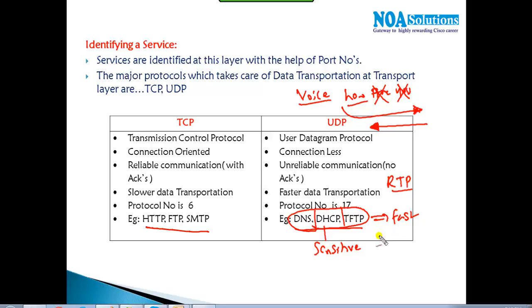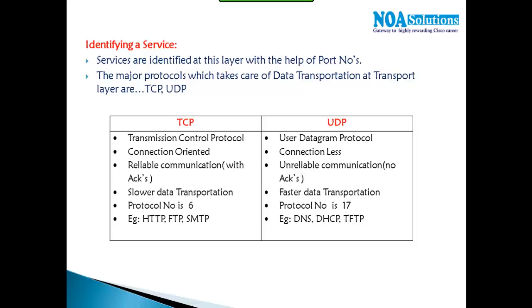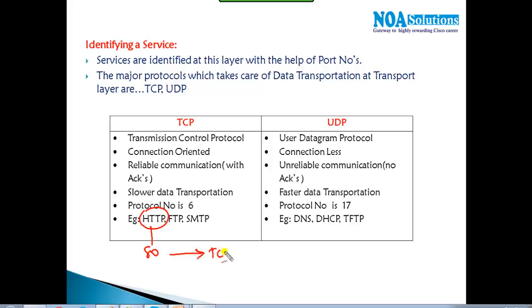Protocols like TFTP, DHCP, and DNS don't need acknowledgements and work based on UDP. Protocols like HTTP, FTP, and SMTP require acknowledgements and work based on TCP. Depending on the type of service — for instance, if it's HTTP — the transport layer will automatically identify it as TCP-based and handle it accordingly.